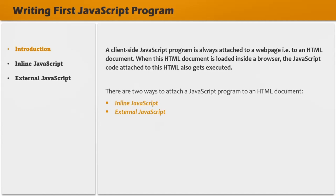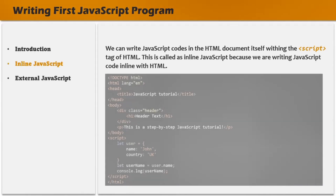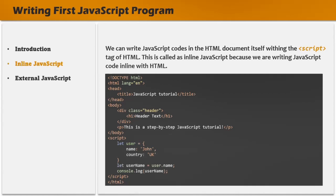Let's first talk about writing inline JavaScript code. We can write JavaScript code in an HTML document itself within the script tag of HTML — this is called inline JavaScript because we write JavaScript code inline with HTML. For example, here we have written some HTML, and in this HTML we are using a script tag, and within that script tag we are writing some JavaScript code.